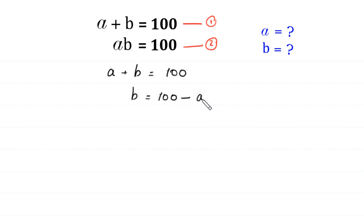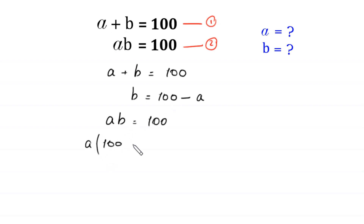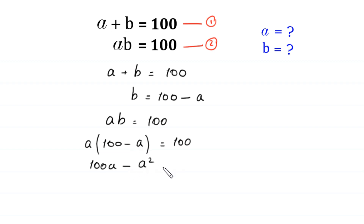We put this value of B, which is 100 minus A, in equation 2. Equation 2 is A times B equals 100, so A times (100 minus A) equals 100. Multiplying out: 100A minus A squared equals 100.